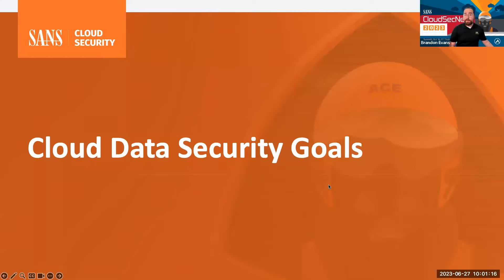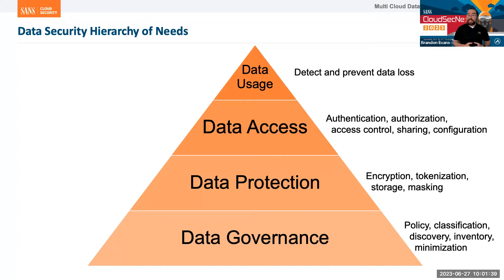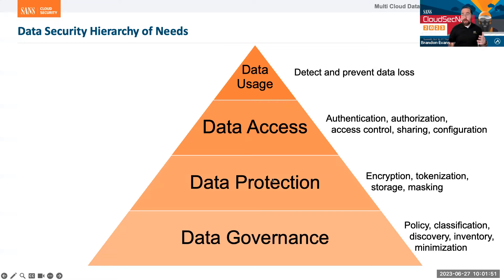Let's first talk about what we're trying to accomplish when it comes to data security. Frank Kim, our curriculum lead in the cloud security curriculum as well as the leadership curriculum, put this diagram together for Leadership 512. That course is a leadership course, but it relates to our course as well because we actually have to implement data security. He calls this the data security hierarchy of needs, and the idea is that the foundational levels are necessary in order to accomplish the goals higher up in the hierarchy.